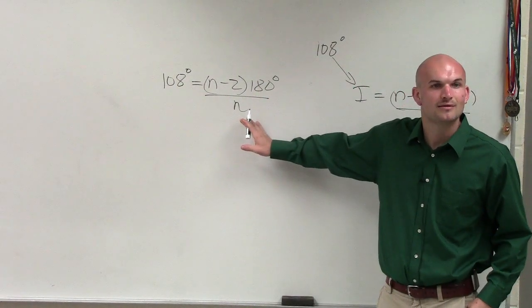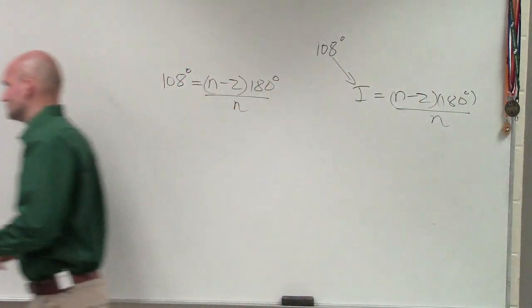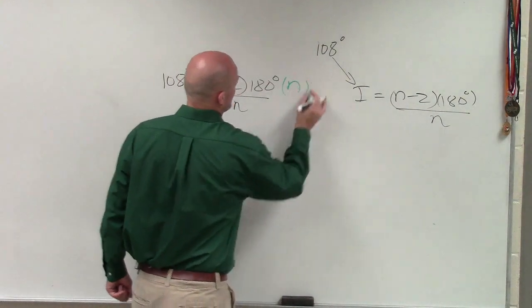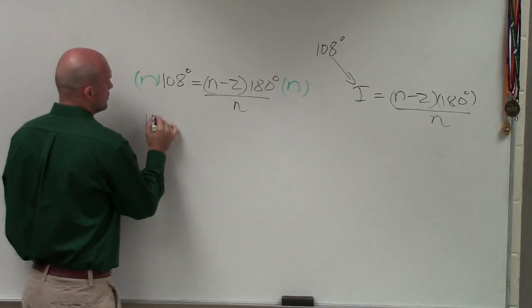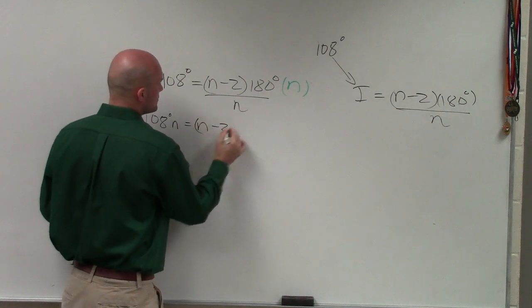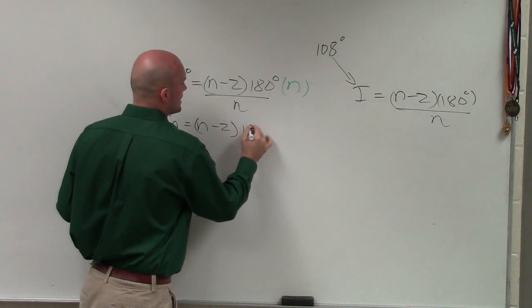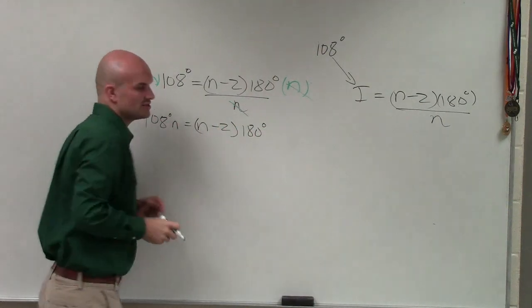Amber? Multiply by n on both sides, right? So what I'll do is I'll multiply by n on both sides. Therefore, I have 108n equals n minus 2 times 180 degrees. Because n divided by n just goes into 1.